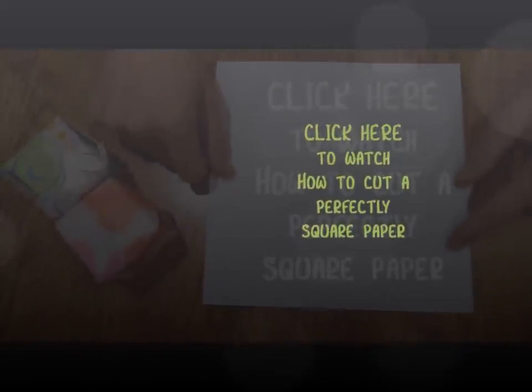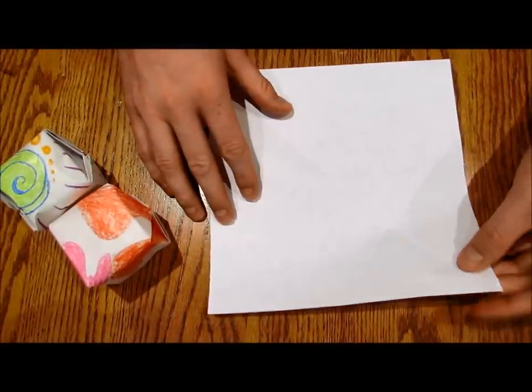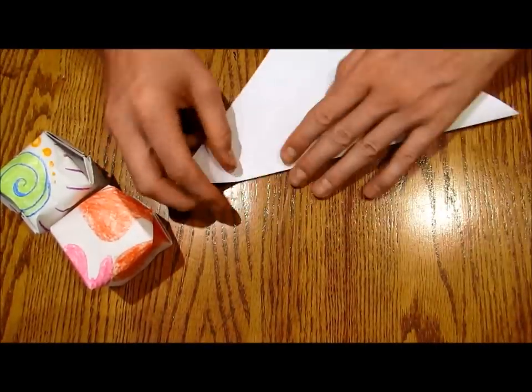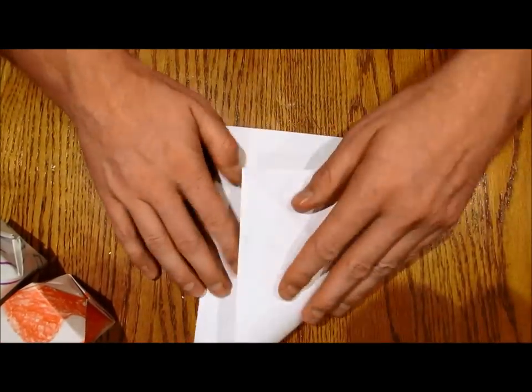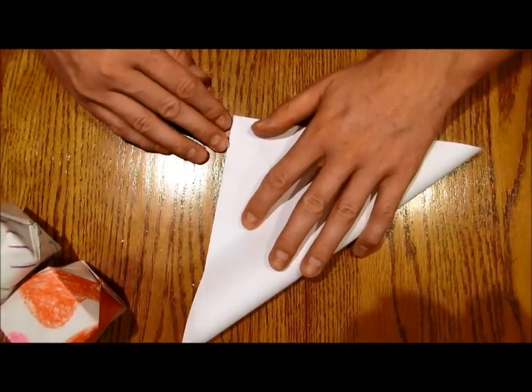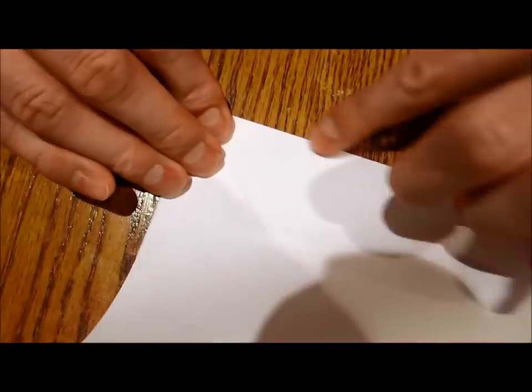So the first thing we want to do is just fold the paper in half like this. And then the next thing you want to do is fold it in half diagonally the same way on the other end. So you just put the two tips together.